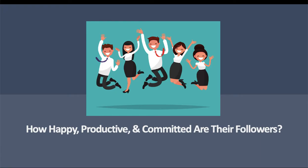We might also consider how a leader influences and affects their workforce and their followers. One measure of leader effectiveness might be how happy, productive, and committed followers are. This last approach is the OB approach. When we're talking about organizational behavior, our focus all semester has been on increasing employees' performance and commitment. Our OB approach is really going to hone in on how employees feel about their leaders, and that will help us determine whether or not the leader is effective.